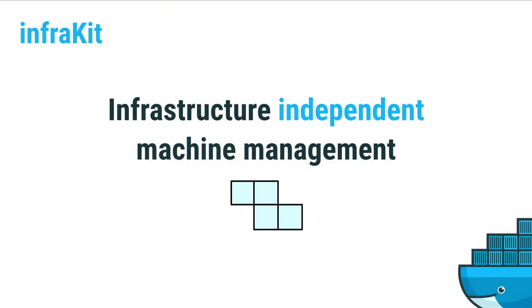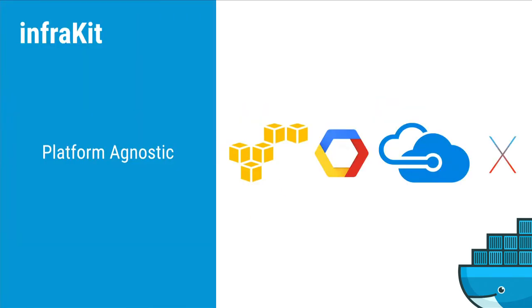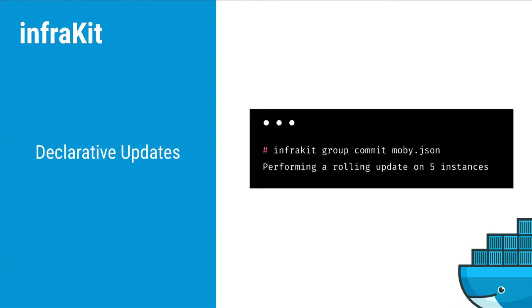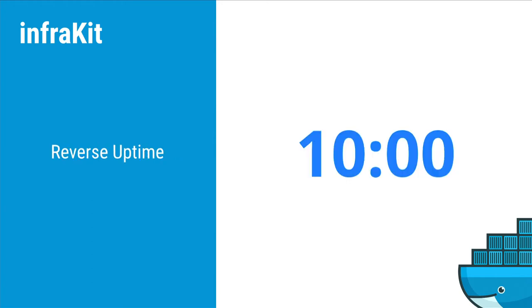Our first security tetrominoe is InfraKit, which provides infrastructure-independent machine management. Across all platforms — cloud or locally — you can use InfraKit to provision and update your infrastructure. InfraKit does this using declarative updates. With a simple InfraKit group commit command, you specify what kind of machines you want, how many machines, what health checks you have, and InfraKit will just make it so.